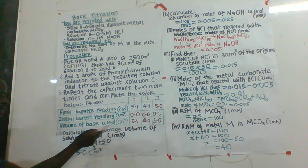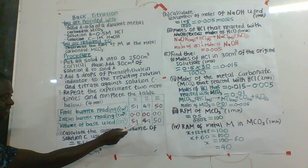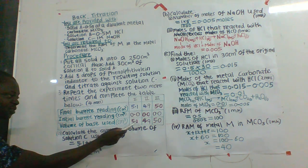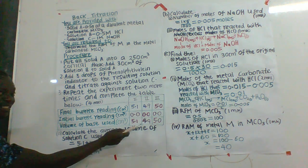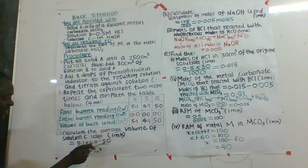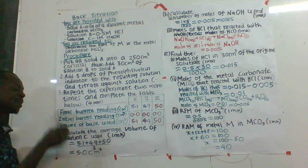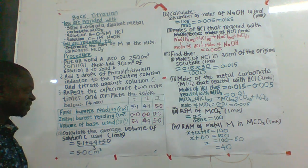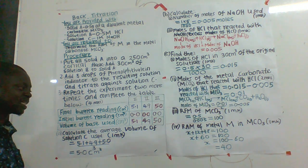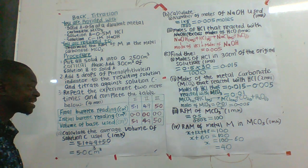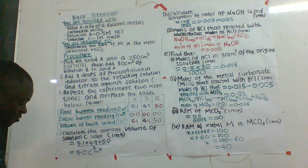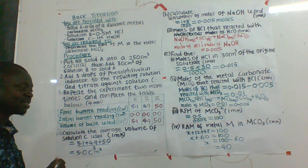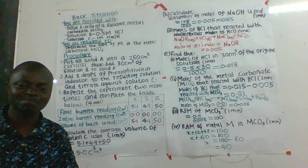For example, the volumes of base used according to the table are 5.1 for the first titration, 4.9 for the second, and 5.0 for the third. Since all values lie within a range of plus or minus 0.2, I will use all three values to get the average. So I take (5.1 + 4.9 + 5.0) ÷ 3, which gives 5.0 cm³ as the average volume. There is also a fourth mark for accuracy, which requires you to perform the experiment carefully without making errors.